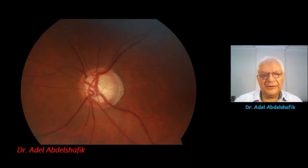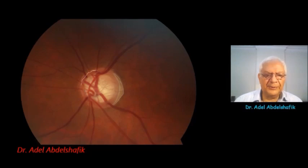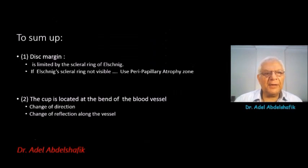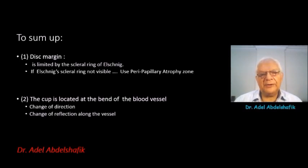This is the outer limit inside the peripapillary atrophy. Here this is the Elshning border, and the neural tissue is just inside it. For the cup, we depend on change of direction of the blood vessels — we don't depend on color. To sum up: the outer border of the disc is defined by being just inside the scleral ring of Elshning, and if this is not available or seen, we depend on the peripapillary atrophy. For the cup, we depend on change of direction of the blood vessels.